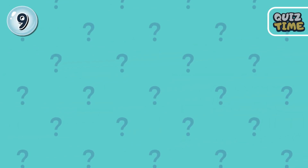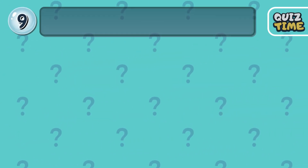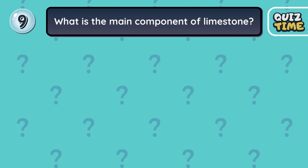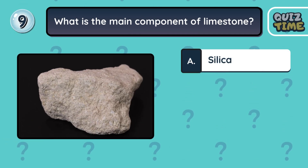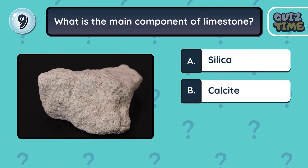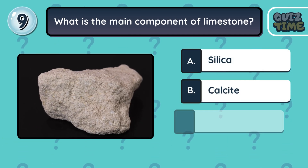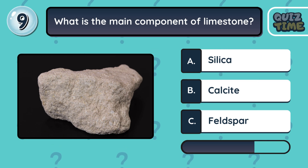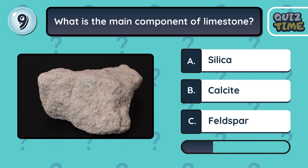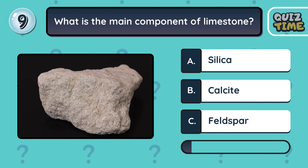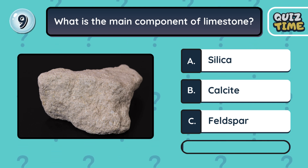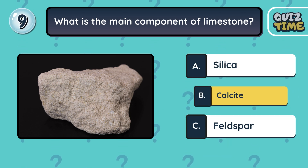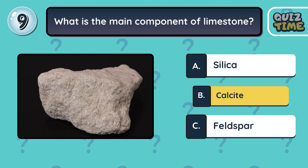Number 9. What is the main component of limestone? A. Silica. B. Calcite. C. Feldspar. The correct answer is B. Calcite.